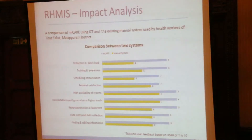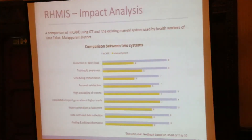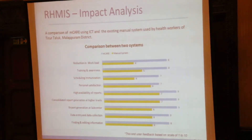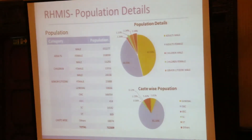This is the impact analysis comparing mCare and the manual system: mCare reduces workload, improves training and awareness, increases personal satisfaction, ensures high availability of reports, and enables consolidation of reports to higher levels. Report generation, data entry, data collection, data finding, searching, and editing are all improved. The population data collected covers 7.2 lakhs, including male adults, children, female categories, and senior citizens.